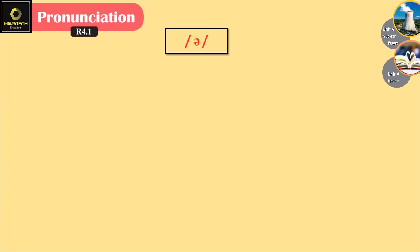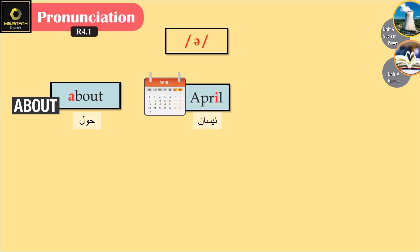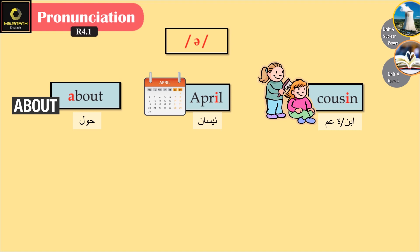The schwa sound /ə/ is the most commonly used sound in the English language. Listen and repeat: about, April, cousin, pencil, woman.